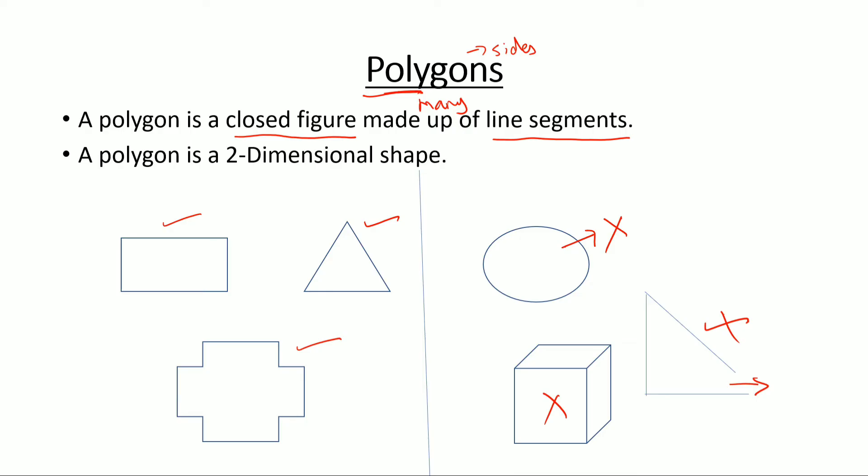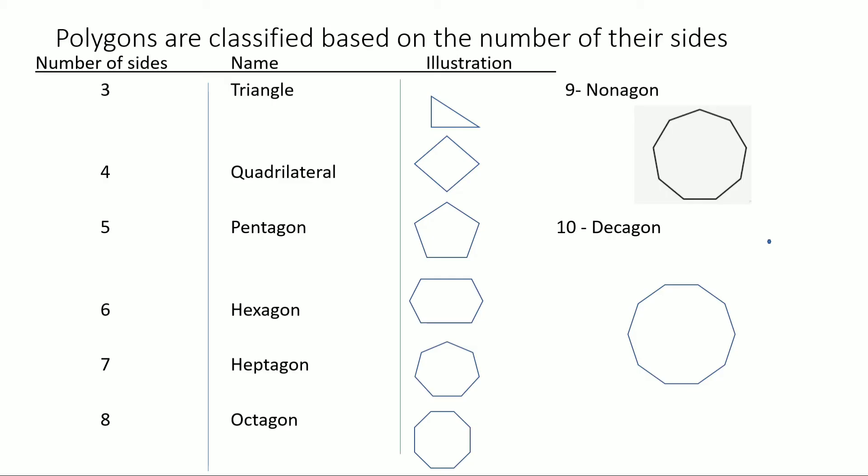Now based on the number of sides, we can name the polygons. The first one is if it's three sides, then it's a triangle.